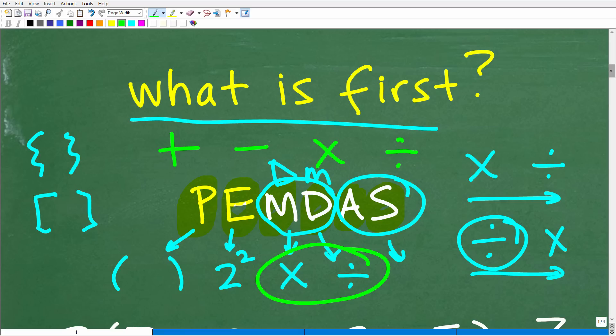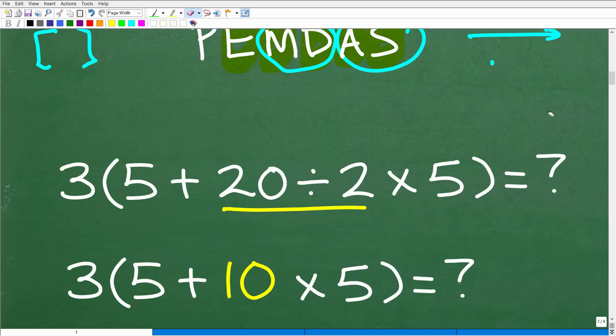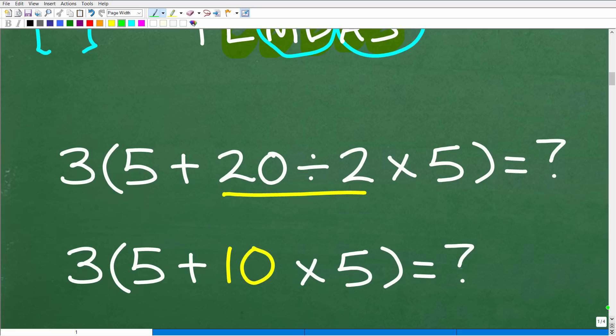Let's start this problem now that we know the correct order of operations. When faced with the problem, scan it and keep PEMDAS in mind. Are there any parentheses? Yes, right here, so we need to go inside the parentheses and work first. E: are there any powers? Nope.